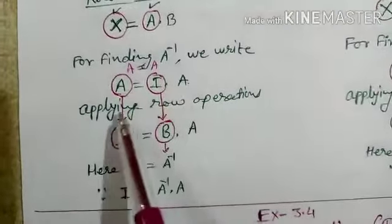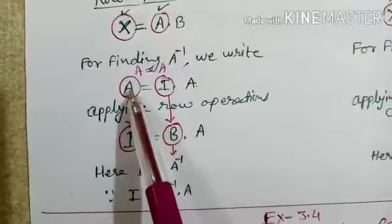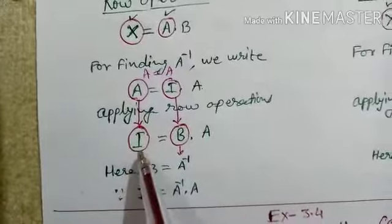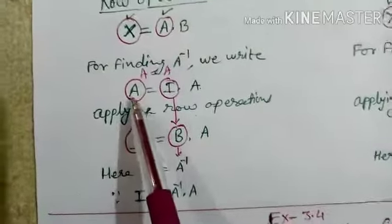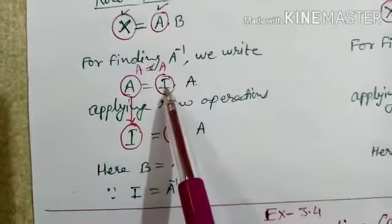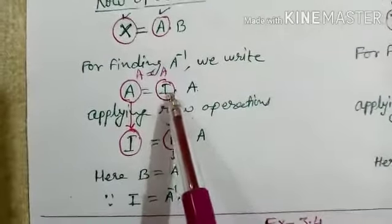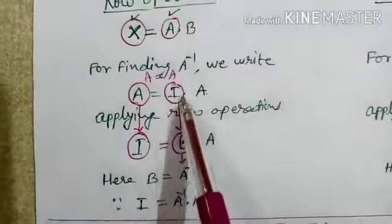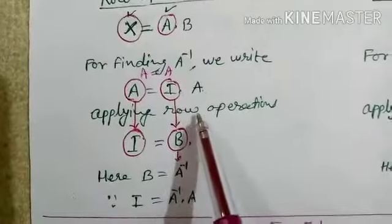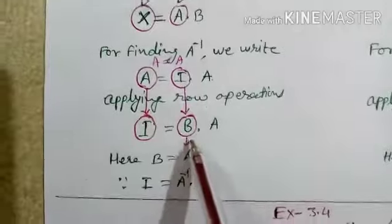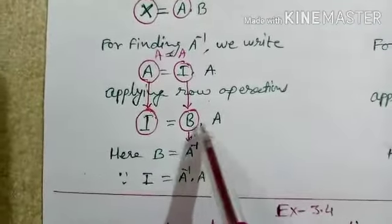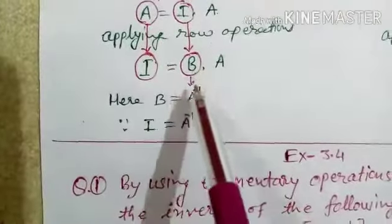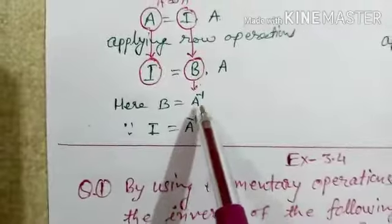By applying row operations, we will convert matrix A into the identity matrix — that is, 1 0 / 0 1. The same operations applied on the identity matrix will convert it into some other matrix B. Now we have A·B = I. Since we know A·A⁻¹ = I, here B is the inverse of A. So this B is A inverse.